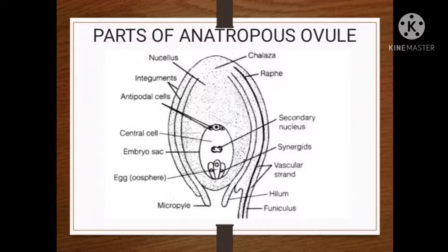The egg apparatus is a group of three haploid cells present towards the micropylar end of the embryo sac. At the center there is the egg cell, and on either side of the egg cell there is the presence of synergids. It consists of a central large cell called the egg or female gamete, and two lateral cells called synergids — also known as helper cells, sister cells, or cooperative cells. Each synergid is characterized by the presence of finger-like projections called the filiform apparatus towards the micropylar end, which directs the pollen tube by secreting chemical substances and absorbs nourishment from the nucellus.